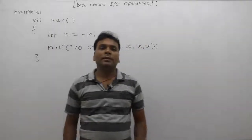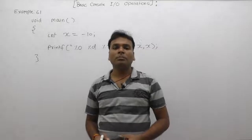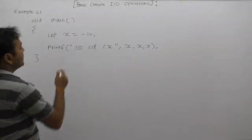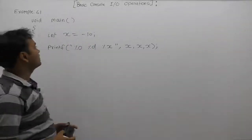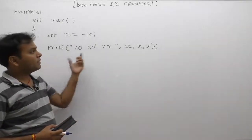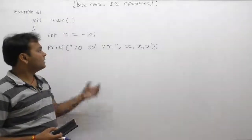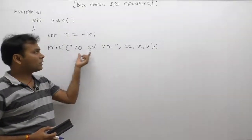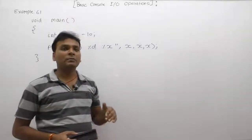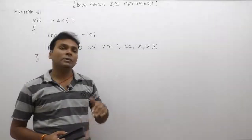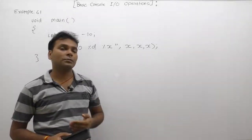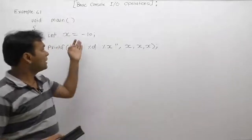Another example of printf functions: what is the output in this case? Here we are assigning minus 10 inside an integer type variable x. After assignment, we are displaying the value of x in three different formats — octal, decimal number system, or hexadecimal number system. In that example, we want to display how to represent negative numbers in these number systems.